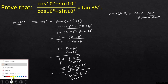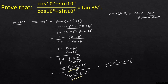Now, this cos(10°) of the numerator and the denominator will cancel, and this is equal to cos(10°) minus sin(10°) in the numerator, upon cos(10°) plus sin(10°) in the denominator — which is our required LHS. And it is proved.